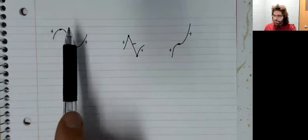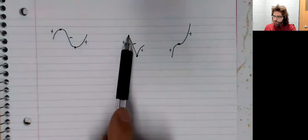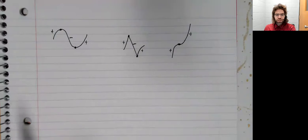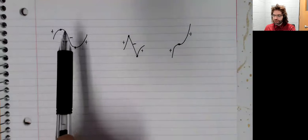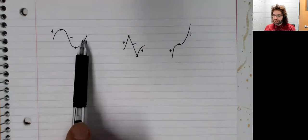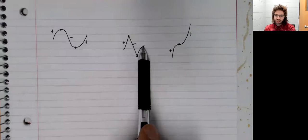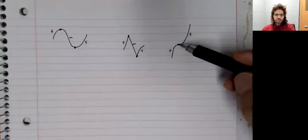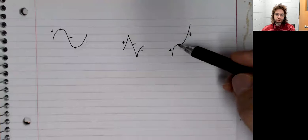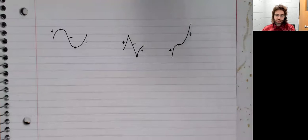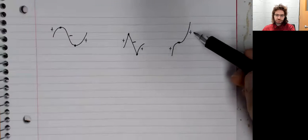Notice that at all four of these local extrema, the derivative changes sign: from positive to negative, from negative to positive, from positive to negative, from negative to positive. Here, where we have a critical value but no local extrema, the derivative does not change sign — it goes from positive to positive.